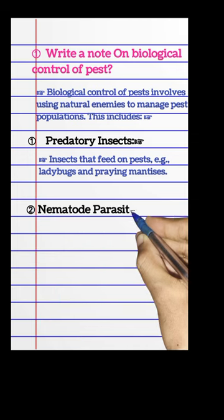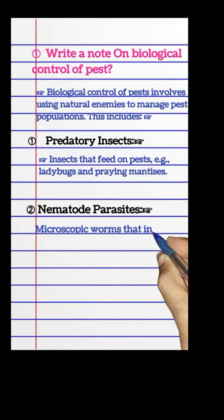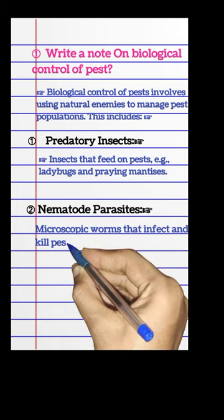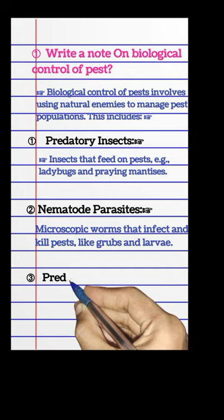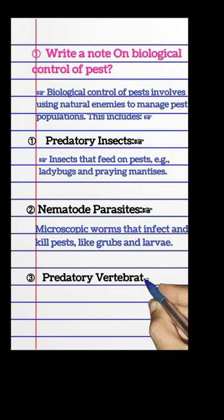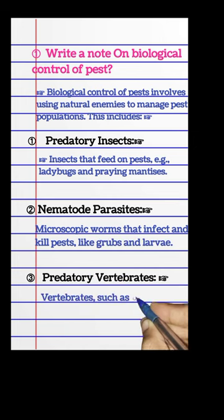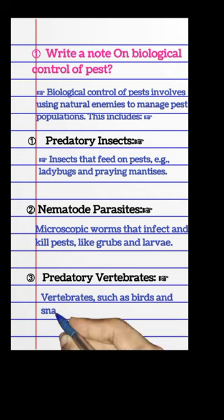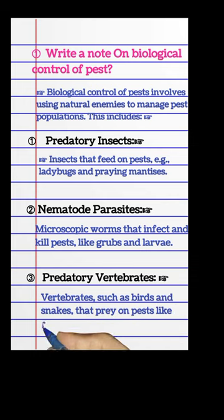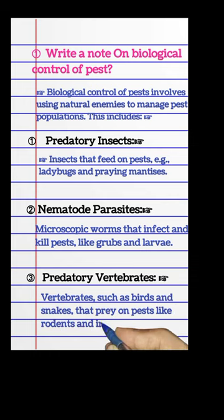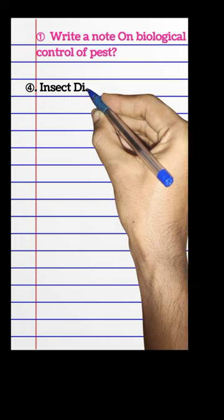Nematode parasites — microscopic worms that infect and kill pests like grubs and larvae. Predatory vertebrates — vertebrates such as birds and snakes that prey on pests like rodents and insects.